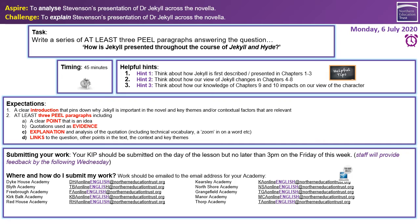We have two clear expectations for this piece of work. First, a clear introduction needs to be written that pins down why Jekyll is important in the novel and key themes and contextual factors that are relevant. Second, we need you to write at least three PEEL paragraphs including a clear point that is an idea, quotations used as evidence, and explanation and analysis of the quotation — including technical vocabulary, a zoom in on a word to explain the meaning and how it tells us about Dr Jekyll. Finally, include links to either the question, other points in the text, the context, or the key themes.